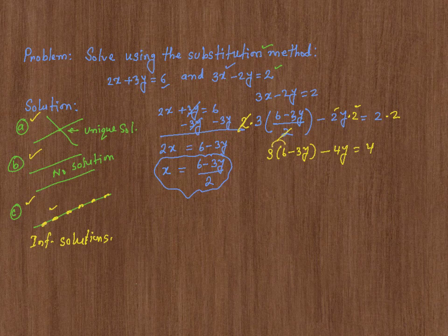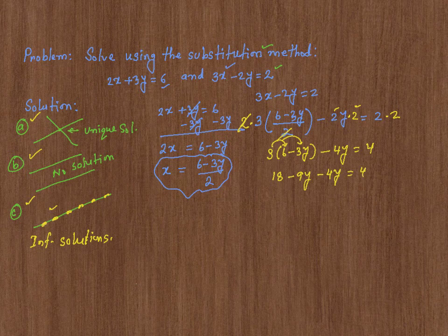Now, use the distributive property. 3 times 6 is 18, and then 3 times negative 3y is negative 9y minus 4y equals 4, or 18 minus 13y. 9y minus 4y is 13y equals 4.